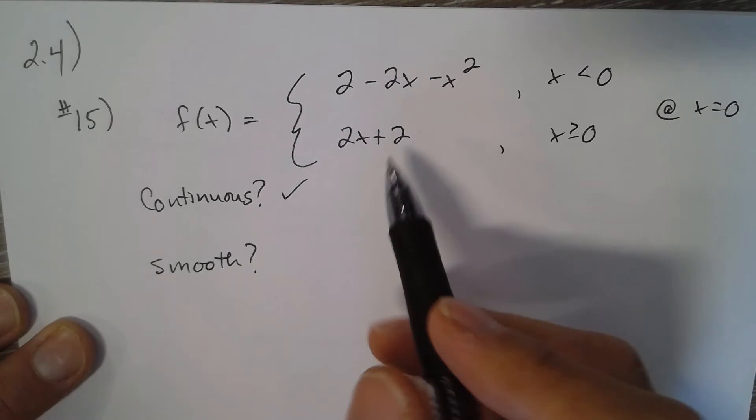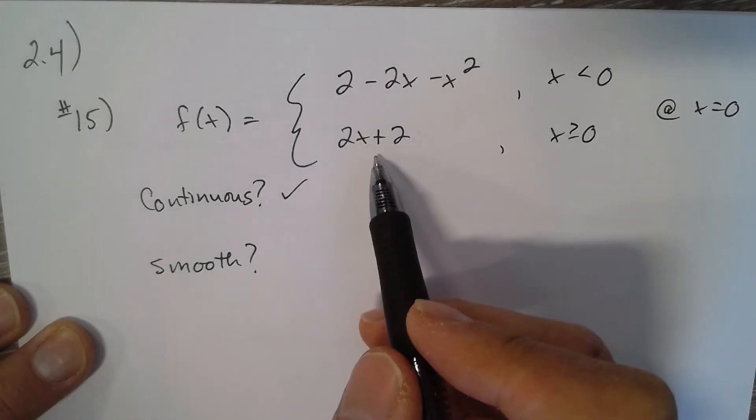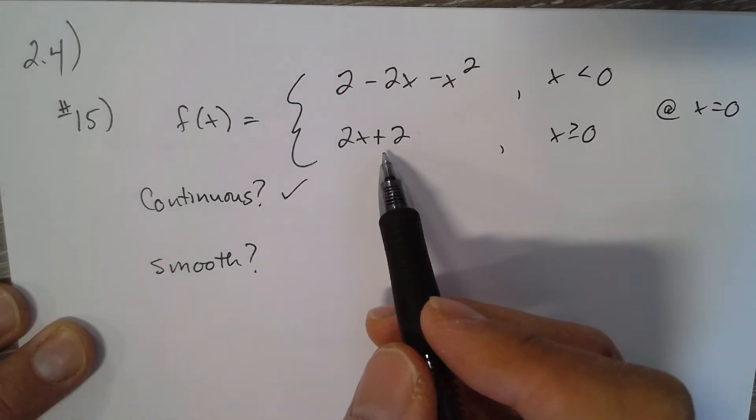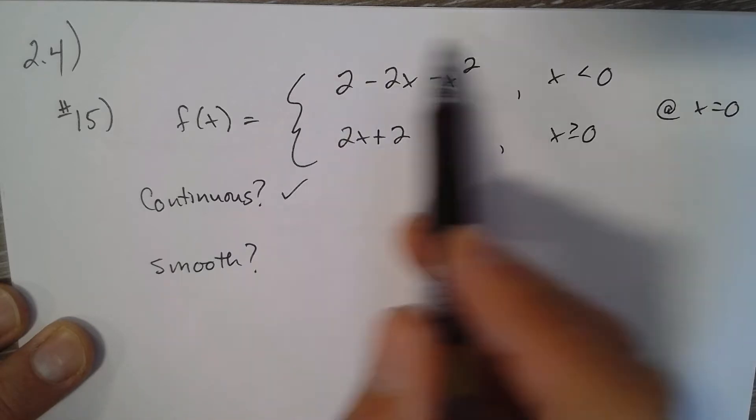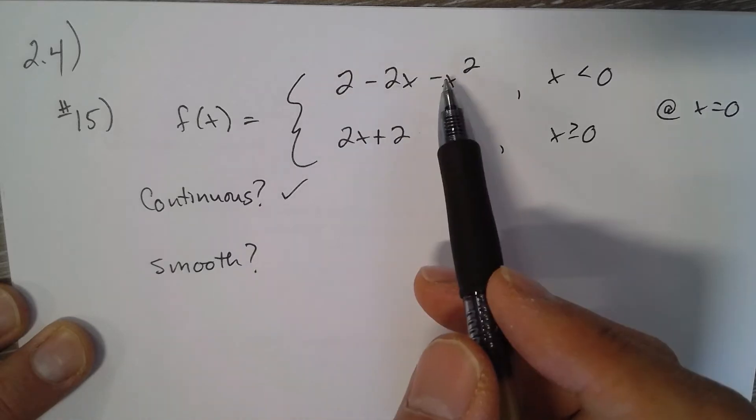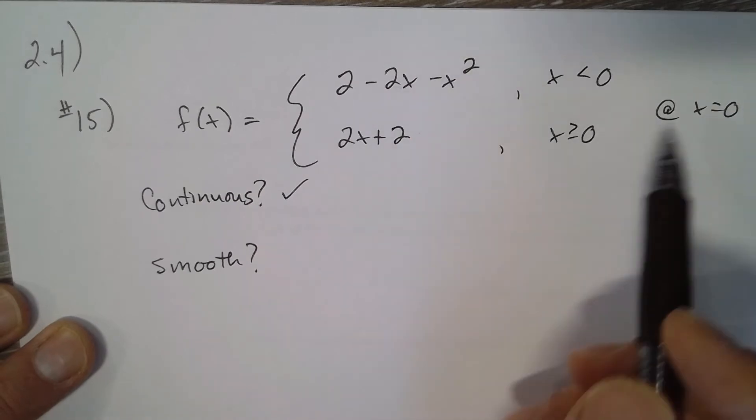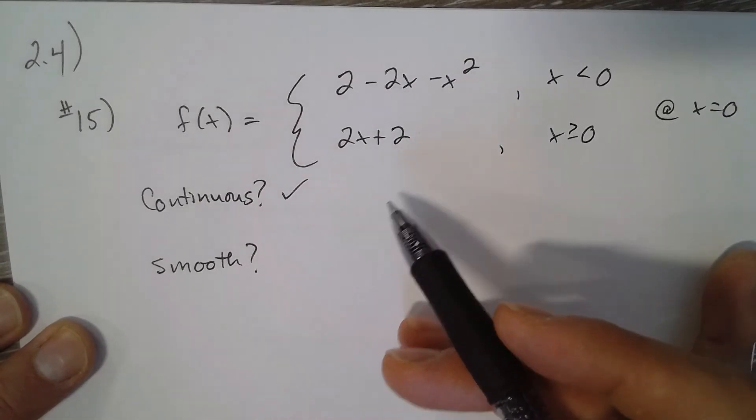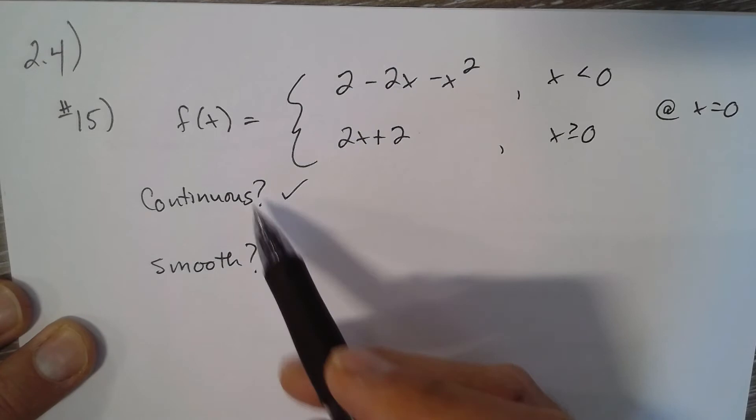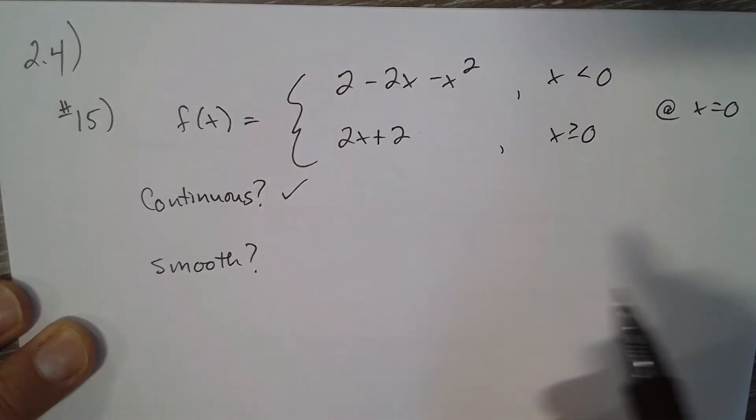Now let's see if it's smooth. The slope of this bottom piece is a line, so that slope is two. We don't have to do a derivative to figure that one out. Let's see if the slope of this parabola is also two at zero. If it is, then we know it's smooth and therefore it would have a tangent line at that point.